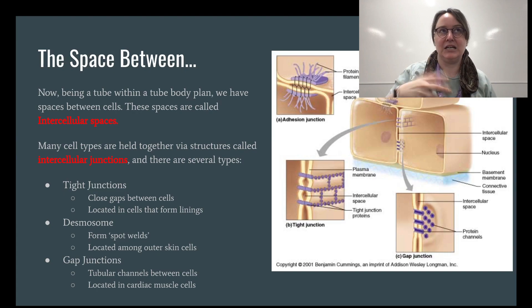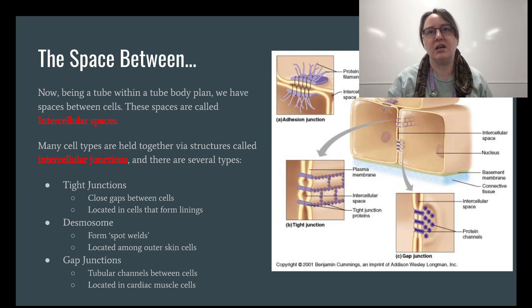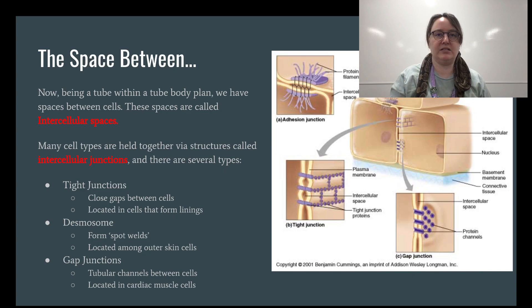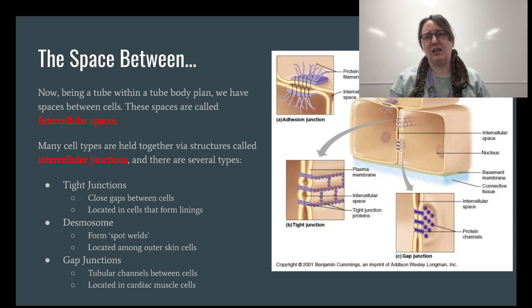Desmosomes are easy to break, which is why we use them in our skin — our skin is actually designed to shed off. It's one of the reasons skin is a protective barrier for us, because we have a cascade of constantly shedding cells.